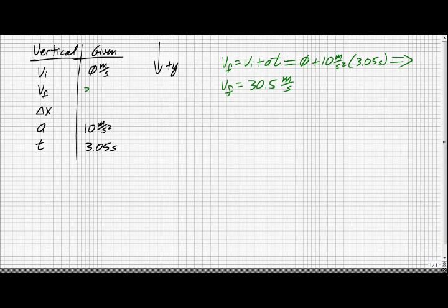We now know vf as thirty point five meters per second, so we could use any of our kinematic equations that have delta x in them. I am going to choose vf squared equals vi squared plus two a delta x. And solving for delta x, delta x will then equal vf squared minus vi squared all over two a.